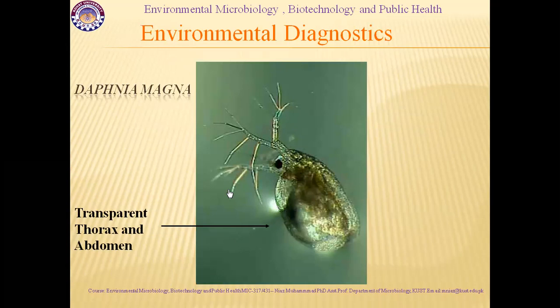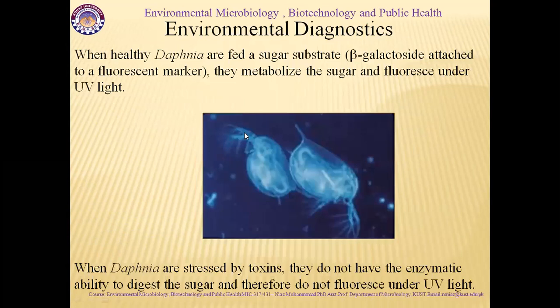One example uses Daphnia, which have transparent thorax and abdomens — meaning the environment is clear and healthy. When healthy Daphnia are fed a sugar substrate with a glucoside attached to a fluorescent marker, they metabolize the sugar and fluoresce under UV light. When Daphnia are stressed by toxins, they don't have the enzymatic ability to digest the sugar and therefore don't fluoresce under UV light. This technique allows us to use living organisms and microorganisms for the detection of pollutants and pollutant concentration in any environment.